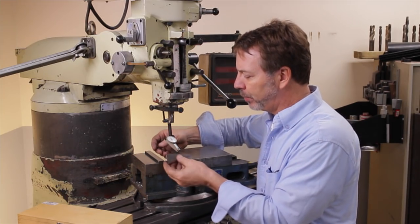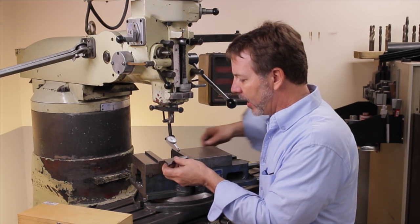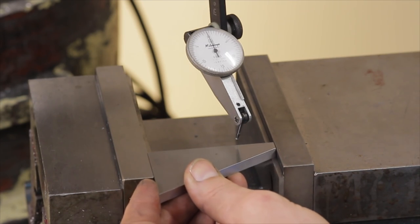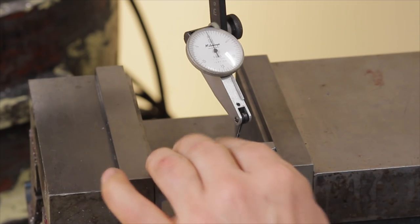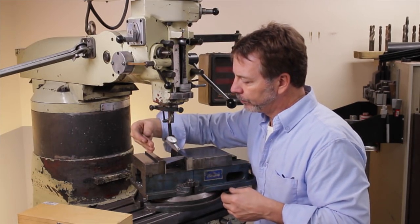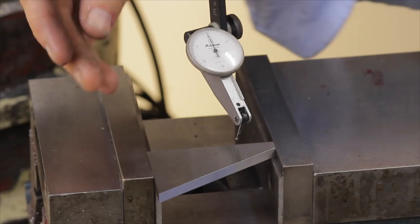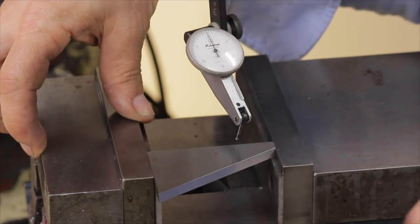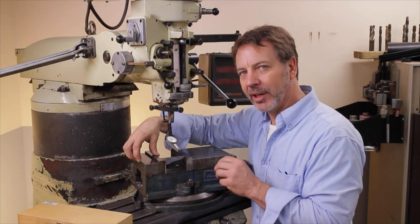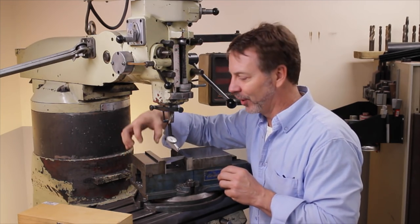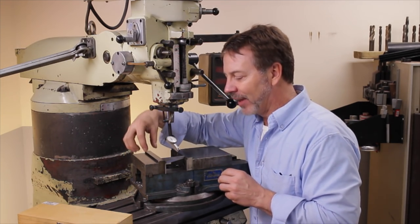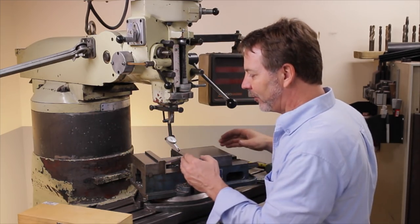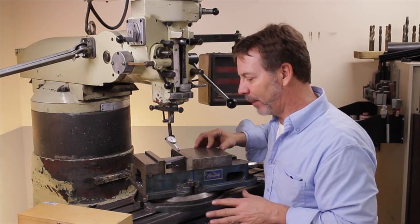What we're going to do is just put the angle block in our vise and we're going to clamp it lightly. I've got the large edge against the fixed vise because that is, in the film industry, what we'd call our hero position. This is what we want to base everything on, is this back jaw.